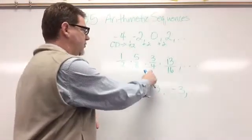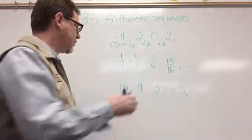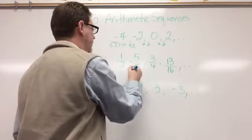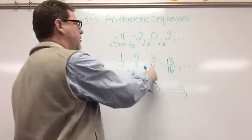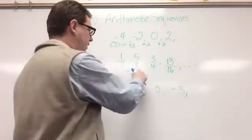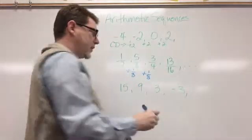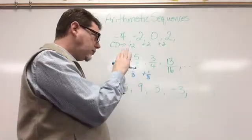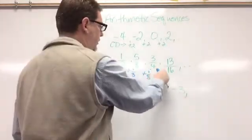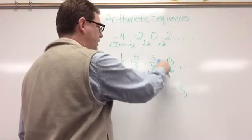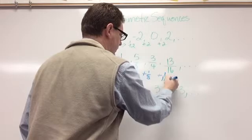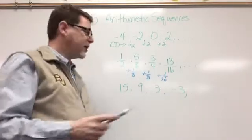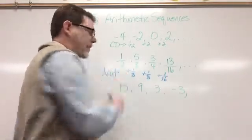Now I have one half, five eighths, three fourths, and thirteen sixteenths. One half is four eighths, so from four eighths to five eighths is plus one eighth. Five eighths to three fourths: three fourths is six eighths, so that's plus one eighth. Three fourths to thirteen sixteenths: three fourths is twelve sixteenths, and twelve sixteenths to thirteen sixteenths is plus one sixteenth. So I started off with one eighth as the difference, but then it changed — this is not an arithmetic sequence.